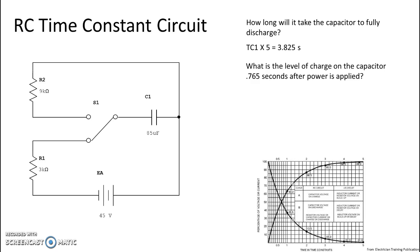Here's our next question, a little more complicated. What is the level of charge on the capacitor 0.765 seconds after power is applied? They've given you an amount of time, but you have to figure out how that time is significant to the circuit. Since it says after power is applied, we are clearly using the charge section of our circuit.